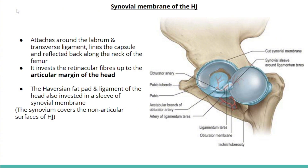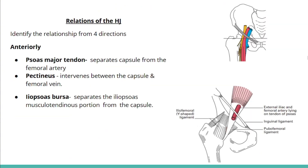The synovial membrane lines the capsule and attaches to the labrum and the transverse ligament inferiorly. It reflects back along the neck of the femur and invests the retinacular fibers up to the articular margin of the head. It also lines the non-articular surfaces — the Haversian pad and the ligament of the head of the femur.